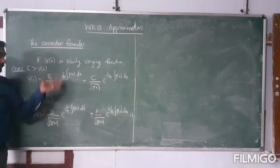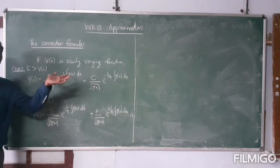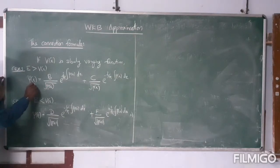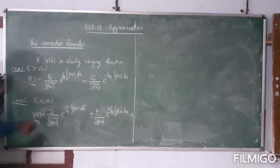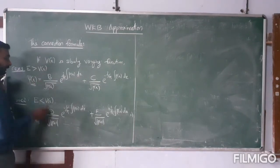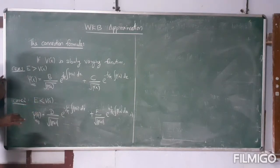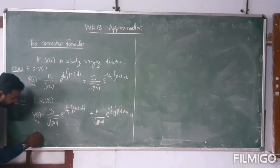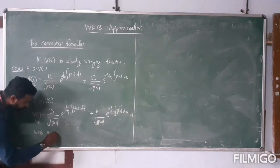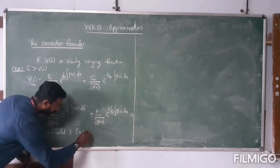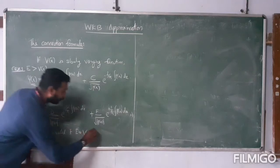In the general WKB approximation, we have already discussed the wave function forms for the classically allowed region and classically forbidden region. Now this condition, or this kind of wave function, is not valid when E is approximately equal to V of x. So the above condition — WKB not valid if E is approximately equal to V of x — this point is called the turning point.